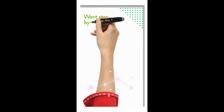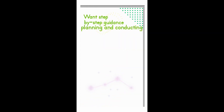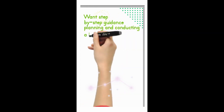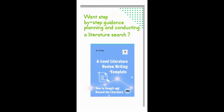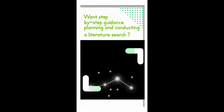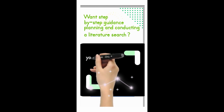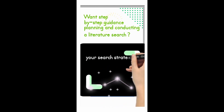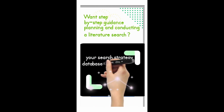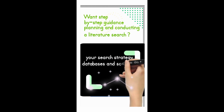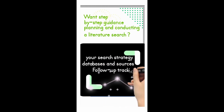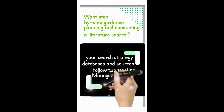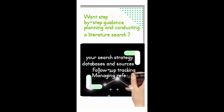Want step-by-step guidance on planning and conducting a literature search? Check out my research notebook, How to Write a Research Paper, Template for Academic Search Record, linked below. It provides practical templates and instructions for planning your search strategy, searching databases and sources, follow-up tracking, managing references, and summarizing sources. With these templates, you'll have the perfect system to organize your literature review.